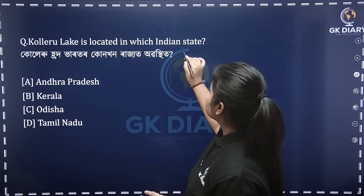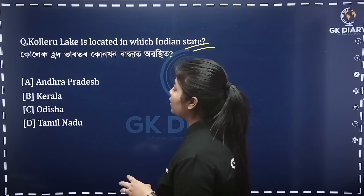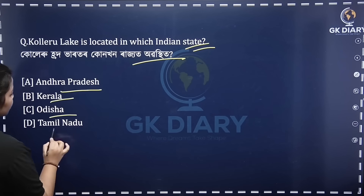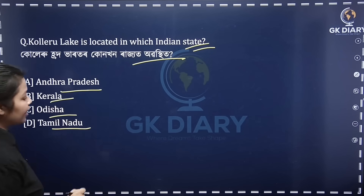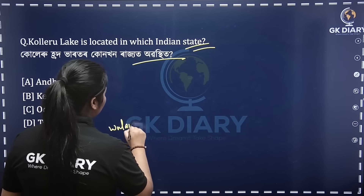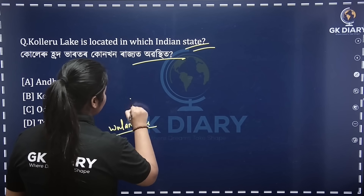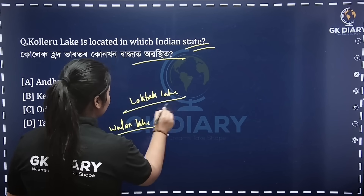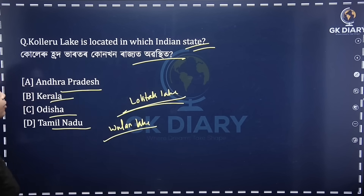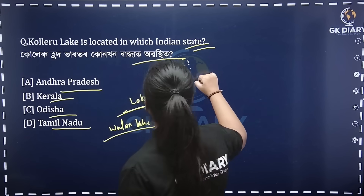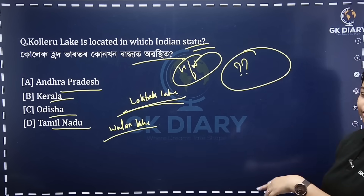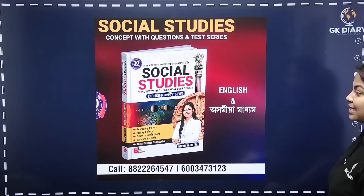Kolleru Lake is located in which Indian state? The options are Kerala, Tamil Nadu, Andhra Pradesh, or Telangana. This looks like a very easy question, a direct question.